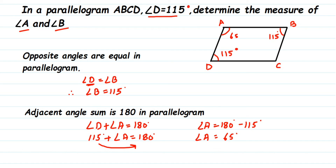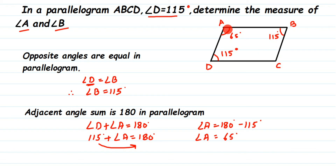If the question also asks for angle C, angle C will also be 65 degrees because opposite angles are equal in a parallelogram, and angle A is 65 degrees. I hope this question is clear. If you have any questions or doubts, you can drop a comment. Thank you so much for watching.